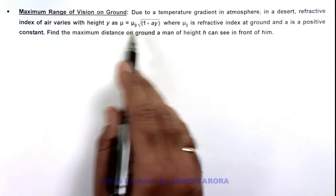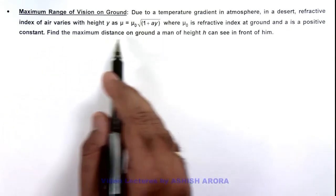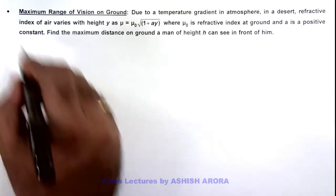So it is saying with height refractive index is increasing. And we are required to find the maximum distance on ground a man of height h can see in front of him.